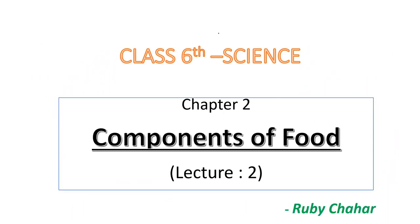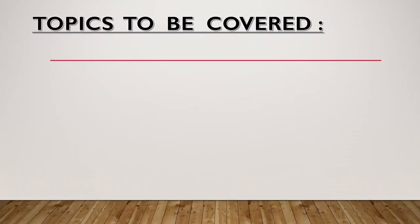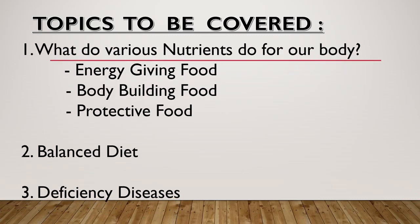Welcome back students. This is Chapter 2, Components of Food, Lecture No. 2 of Class 6 science. Here we will be covering a few topics: what do various nutrients do for our body — they are energy giving food, body building food, and protective food; balanced diet; and deficiency diseases.